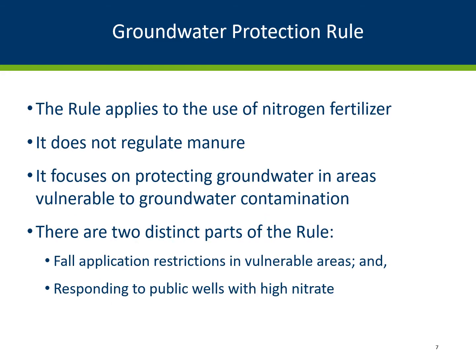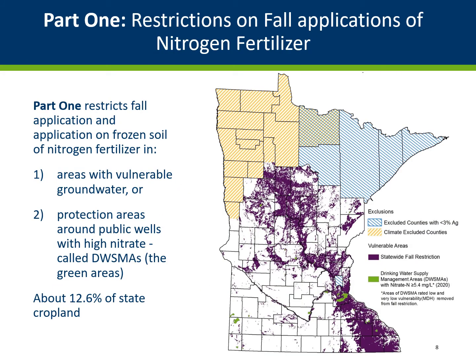The rule applies to the use of nitrogen fertilizer because that is what the MDA has the authority to regulate. The rule does not regulate manure. There are two parts to the rule: the first is the fall application restrictions in vulnerable groundwater areas, and the second is responding to public wells with high nitrate. Part 1 restricts the application of nitrogen fertilizer in the fall and on frozen soils in areas with vulnerable groundwater, or protection areas around public wells with high nitrate, called DWISMAs, or drinking water supply management areas.